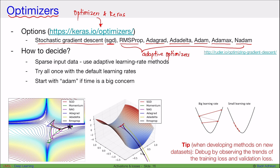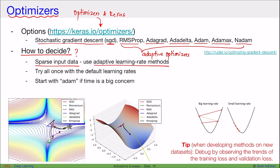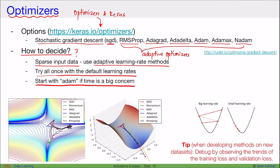How do you decide which optimizer to use? There is no single answer — you have to try them. There are some general rules: for example, if the input data is very sparse, using an adaptive learning rate method usually helps. The recommendation is to try all of them with default learning rates. Start with something like Adam or RMSProp, and either should be a good starting point.